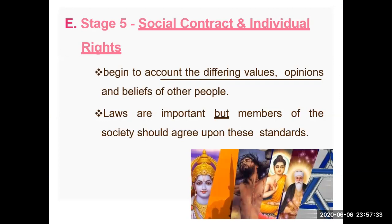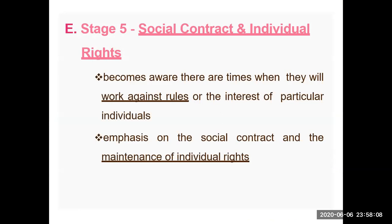In the social contract and individual rights stage, people begin to account for differing values, opinions, and beliefs of other people, and start to respect others by understanding them. As individual persons, our values can be different. Laws are important, but members of society should agree upon these standards. For example, one can be Muslim, Christian, or Hindu — their laws and values are different, but they respect each other's religion. Sometimes people may work against certain rules in the interest of individual rights, emphasizing the social contract. Individual rights are strongly developed at this stage.